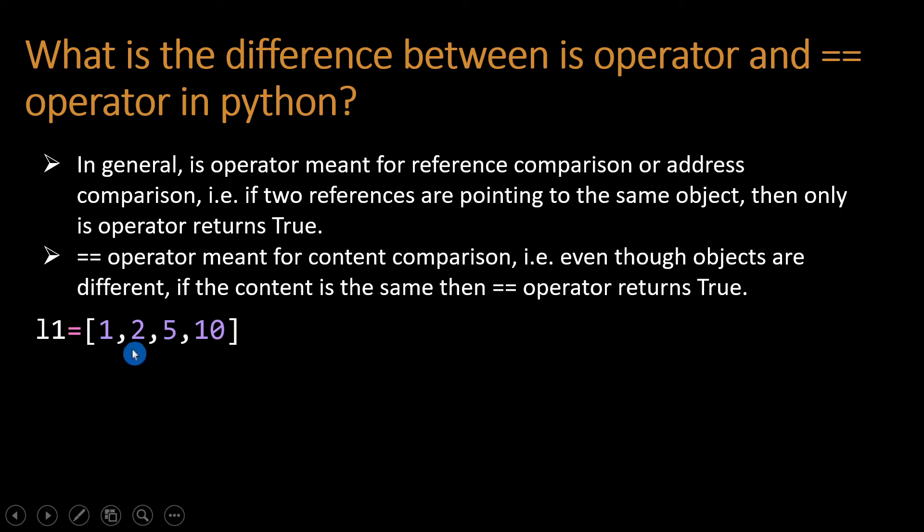Let's see an example. l1 equals [1, 2, 5, 10]. After that, l2 equals [1, 2, 5, 10]. I print id(l1), so I got output 25808648. And I print id(l2), we got the output 25808744.